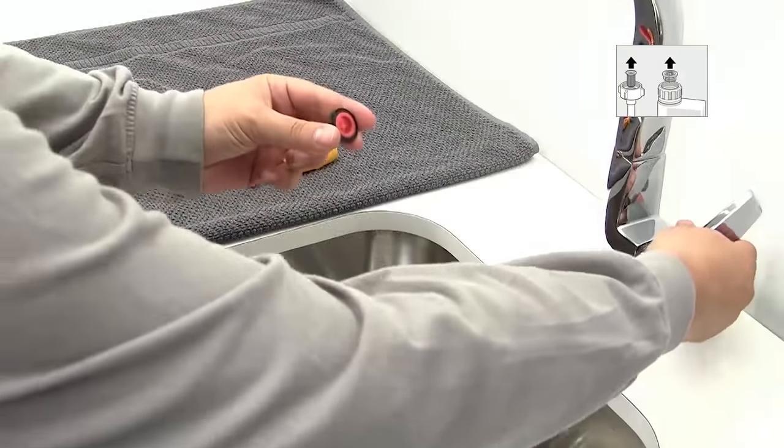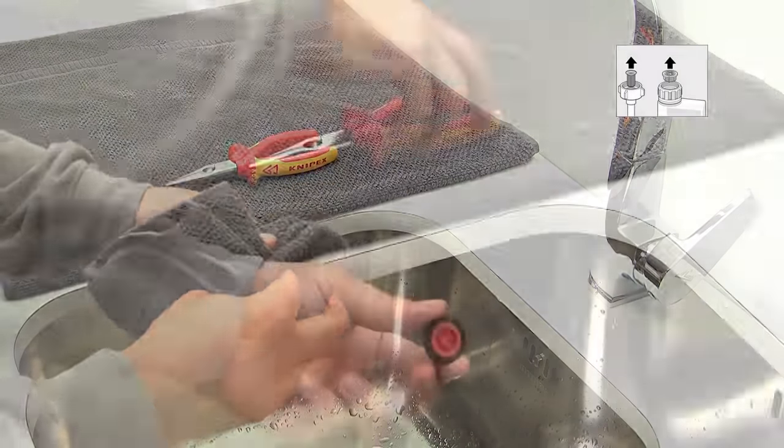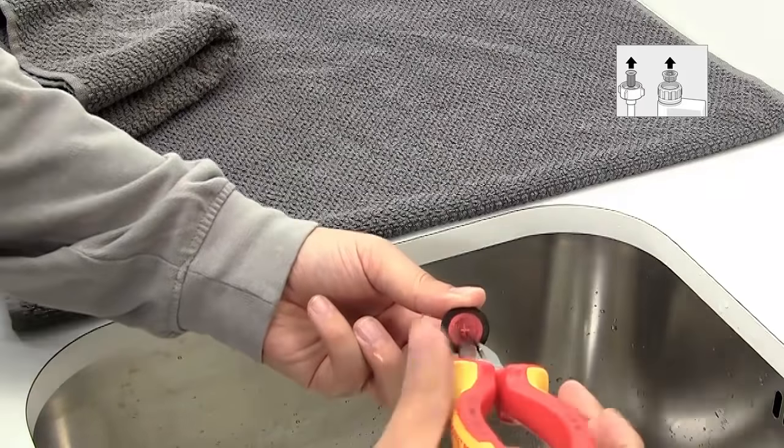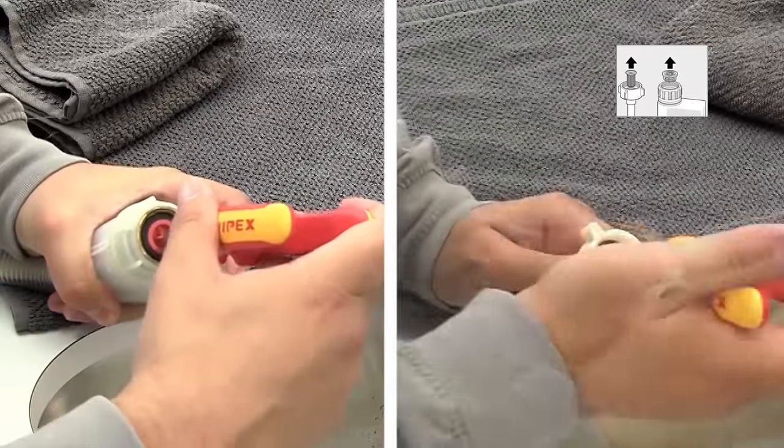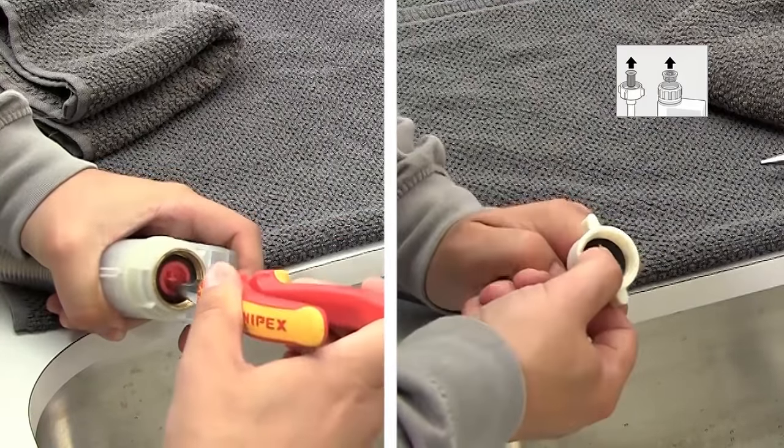You can now clean the filter under the tap. The filter should be securely reattached to the hose using the pliers, ensuring it is fully and securely pressed in. Hold it in the middle and not the side to avoid damaging the filter.